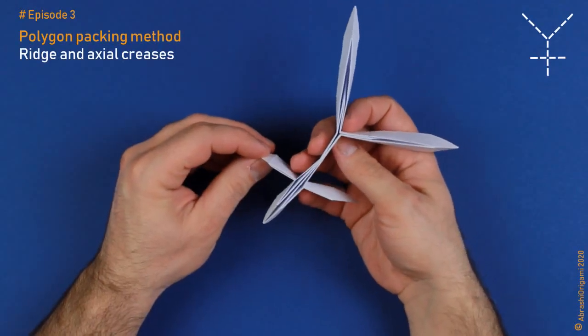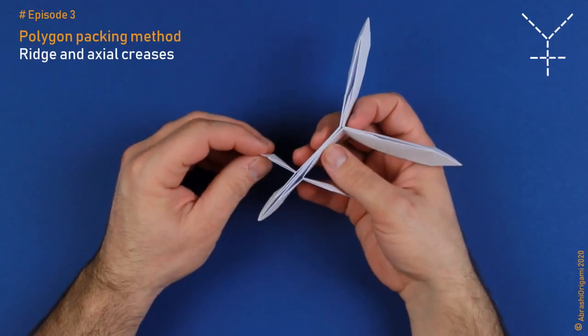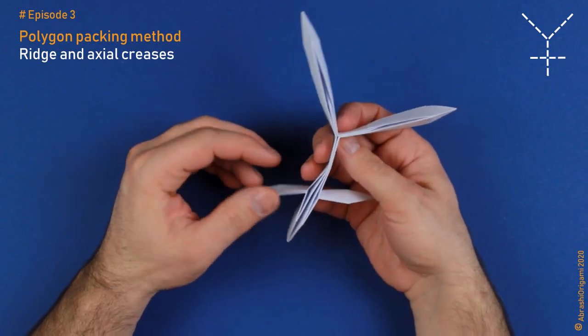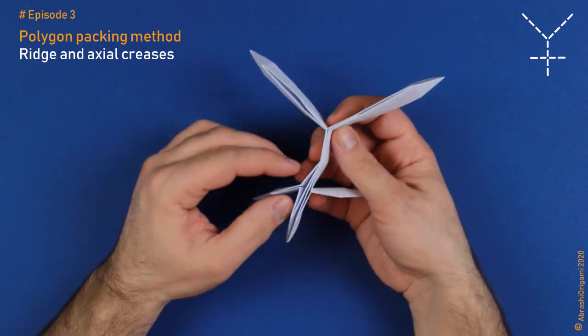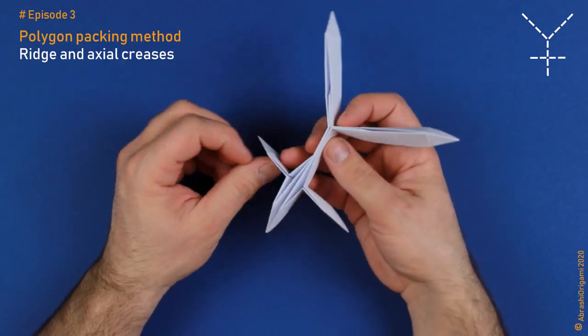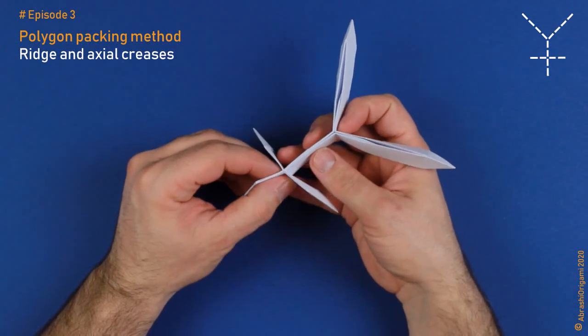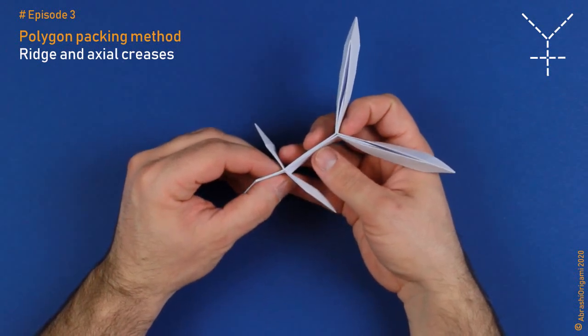Let's start with the ridge crease, with its definition. Unlike the hinge crease, the ridge crease is a line or a crease that radiates outwardly from a polygon's center. To be sure you understand the definition, let's see our simple example once again.